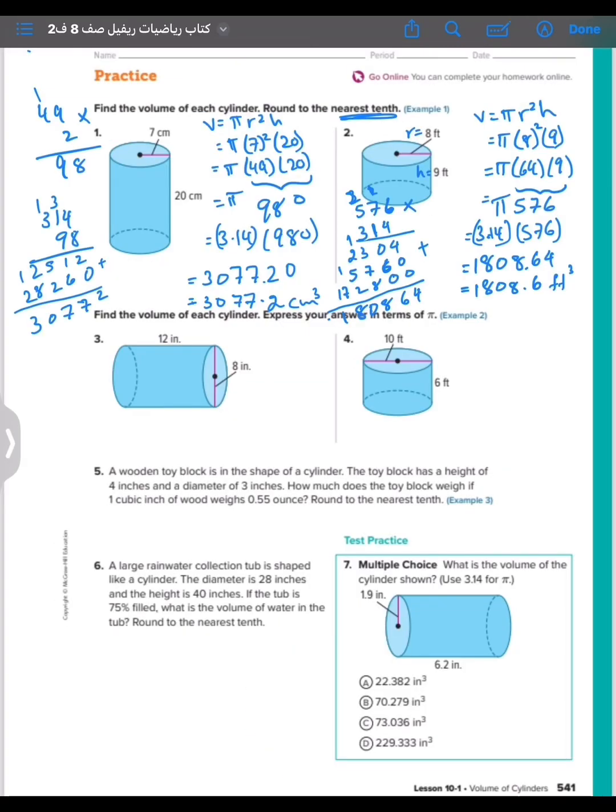Question number three: find the volume of each cylinder, express your answer in terms of pi. So they want it in terms of pi. At the beginning, let's decide which one is r and which one is h. This is h, so we have h equal 12. And we have r equal 8 over 2, which is 4. This is not r, this is diameter.